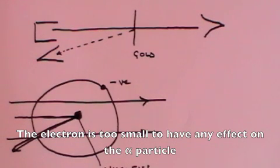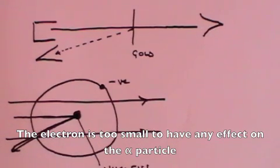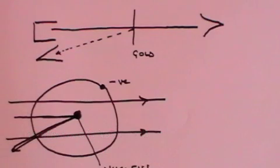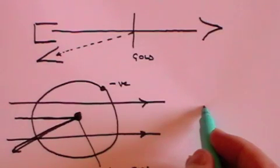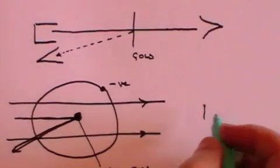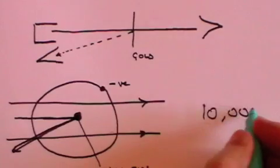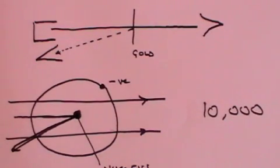And Rutherford could work out what the size of the nucleus was compared with the size of the atom by knowing what proportion of the alpha particles were reflected. And he concluded that the nucleus would have a diameter approximately 10,000 times smaller than the diameter of the atom.